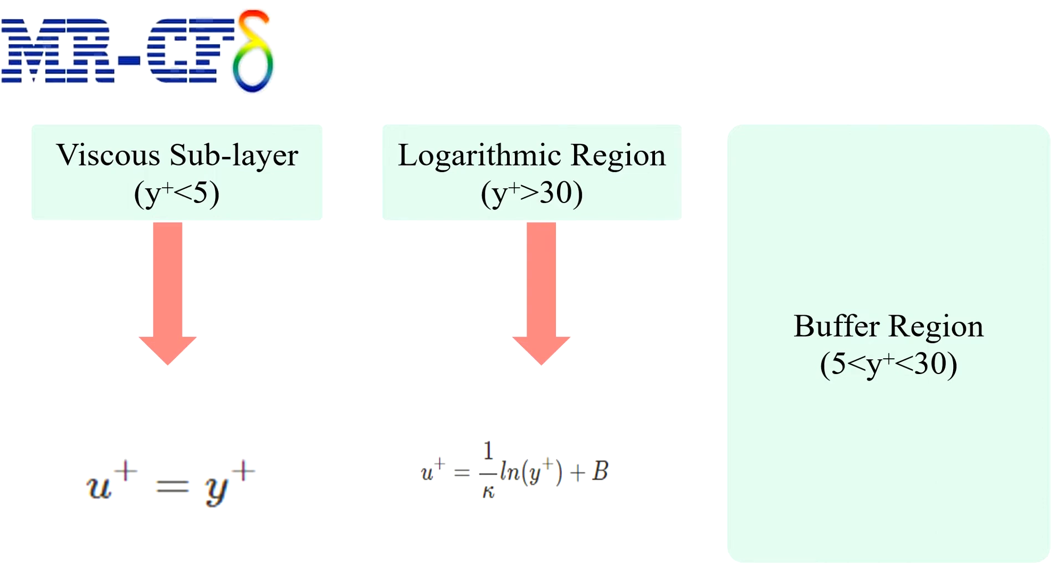And about the buffer layer. The buffer layer is the transition region between the viscosity dominated region and turbulence dominated part of the flow. Viscosity turbulent stresses are of similar magnitude and since it is complex, the velocity profile is not well defined and the original wall functions avoid the first cell center located in this region.